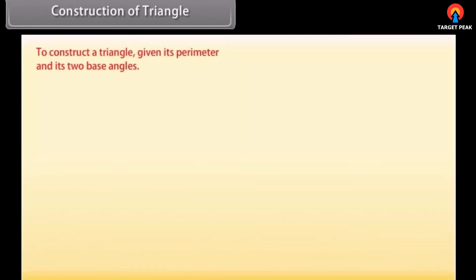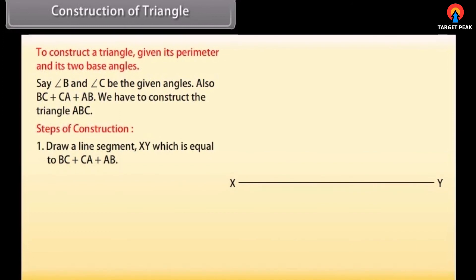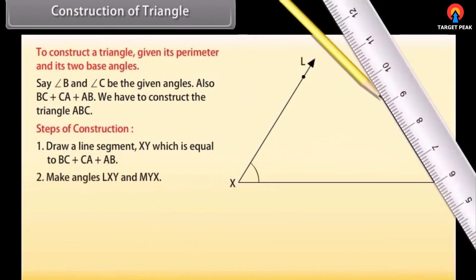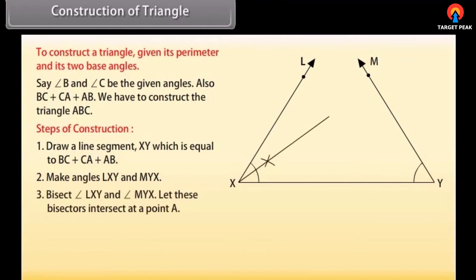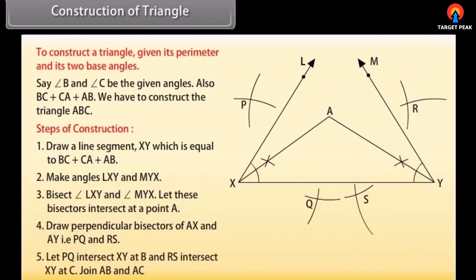Now we will construct a triangle given its perimeter and its two base angles, say angle B and angle C. Also given is BC plus CA plus AB. Steps: draw a line segment XY equal to BC plus CA plus AB. Make angles LXY and MYX equal to the given angles. Bisect angles LXY and MYX; let these bisectors intersect at point A. Draw perpendicular bisectors PQ of AX and RS of AY. Let PQ intersect XY at B and RS intersect XY at C. Join AB and AC. Then ABC is the required triangle.